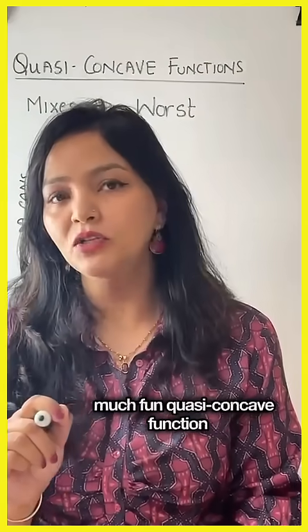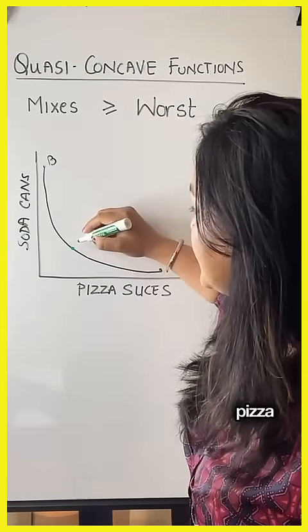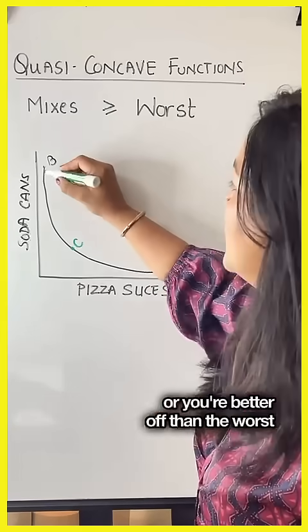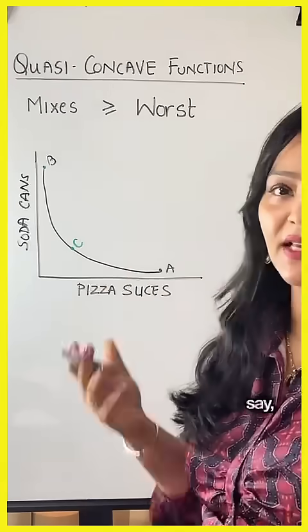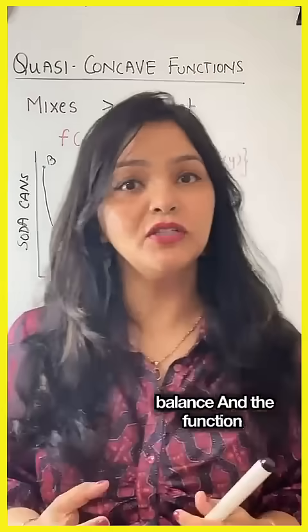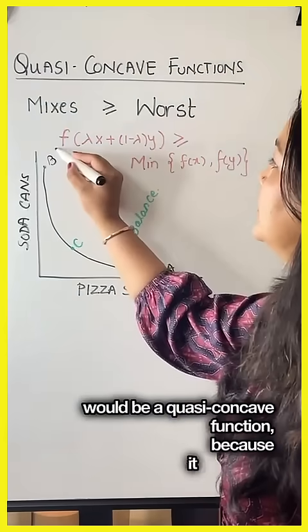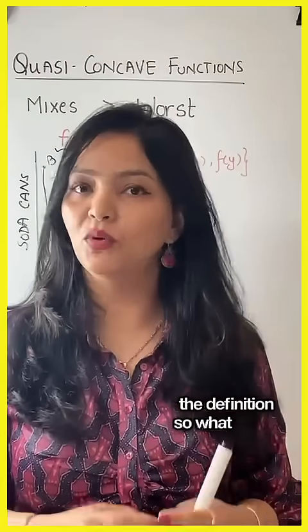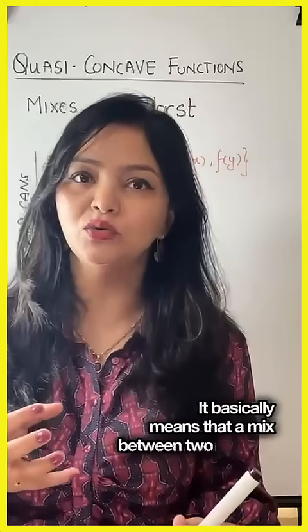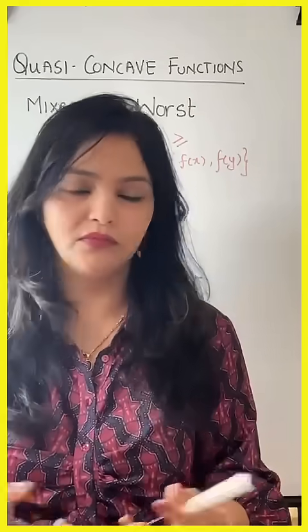A quasi-concave function basically borders your preferences. If you mix some pizza and soda, you are at least as happy — or better off — than the worst case, which is having just soda. This curve shows that you prefer balance. A quasi-concave function satisfies this definition: a mix between two choices, like Netflix and studying, will keep you at least as good as the worst choice of, say, just watching TV.